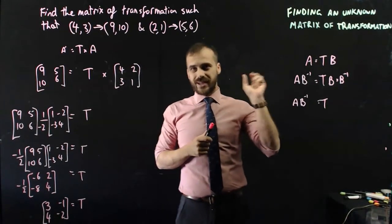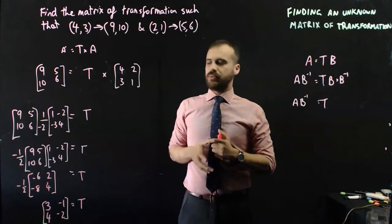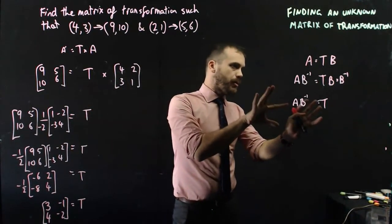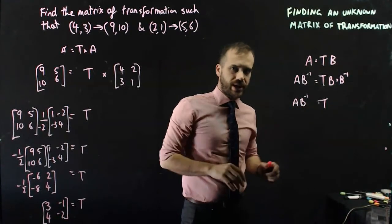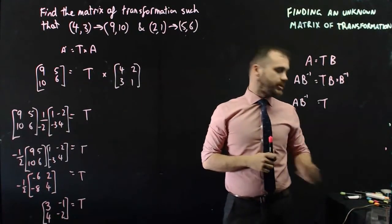That's an example of finding an unknown matrix of transformation. You're going to need some points to do that, and you're going to need to remember that you're performing post-multiplication, not pre-multiplication. Alright, that's it. Thank you.